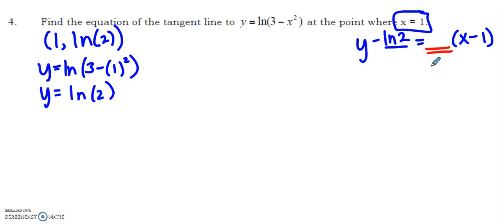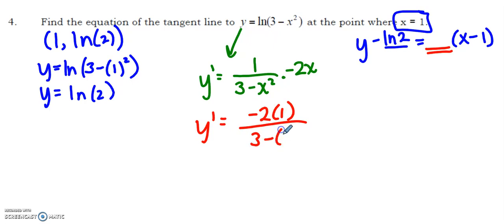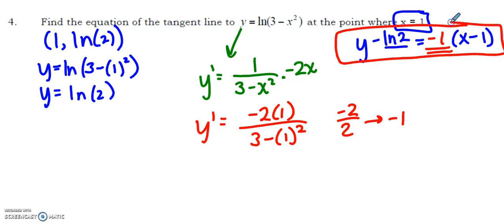The last thing I need to find is the slope, which is the derivative of this function at x equals one. y prime equals 1/(3-x²) times -2x. I specifically need y prime when x equals one: -2(1)/(3-1²) equals -2/2 which is a slope of -1.